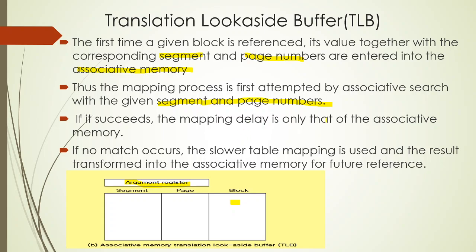If a TLB hit occurs, the mapping delay is only that of the associative memory — very fast. If there is no match in the TLB, the slower table mapping procedure is used, and the result is entered into the associative memory for future reference.